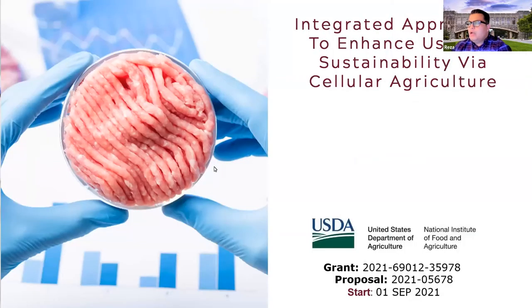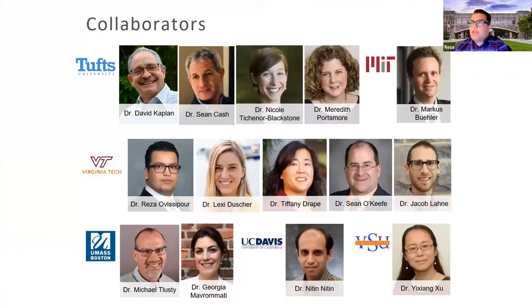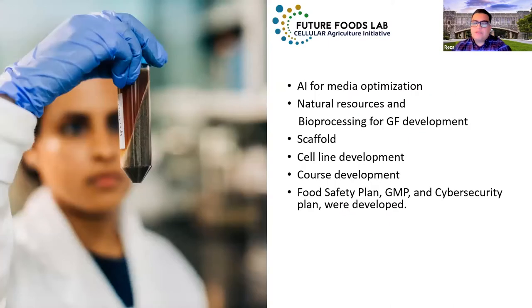We have a really large $10 million grant from USDA, led by Dr. David Kaplan at Tufts University. We have six different institutions involved: Tufts, Virginia Tech, UC Davis, Virginia State University, University of Massachusetts Boston, and MIT. We are trying to address most of the gaps we are facing in cellular agriculture.